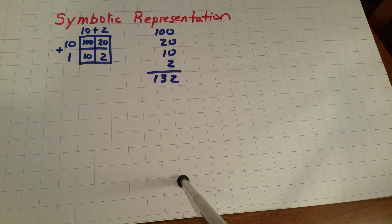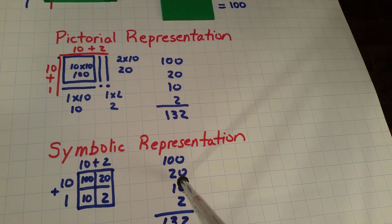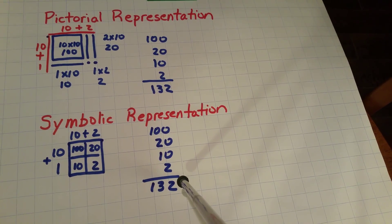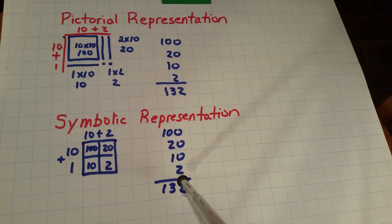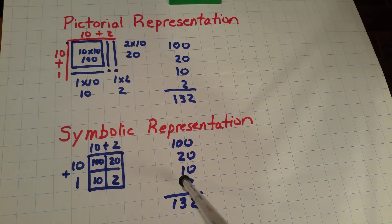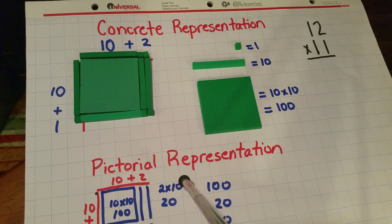I want students to be able to now directly connect the symbolic representation to the pictorial representation, and you should be able as a teacher to help them connect that by multiple repetitions of this kind of strategy. Also, remember that we still have the concrete representation.